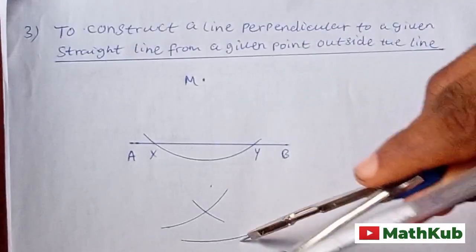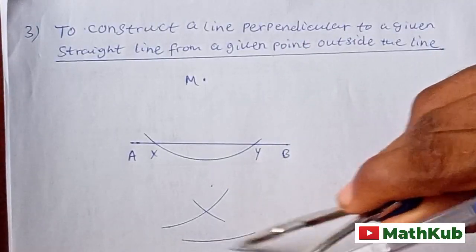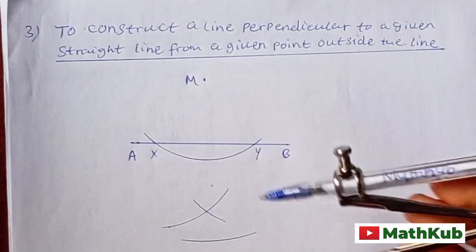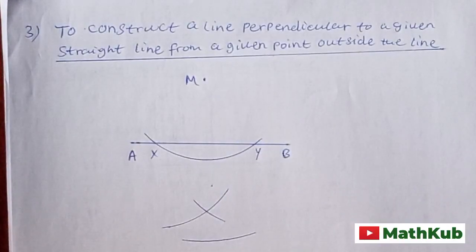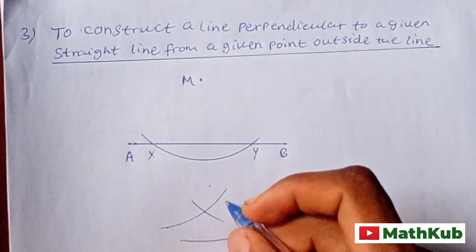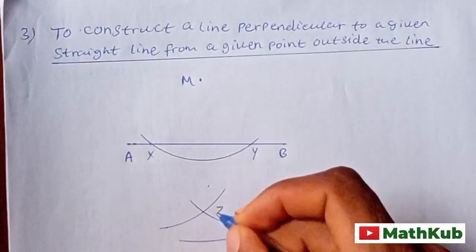All right, this line is not part of the construction. That's why I say when you are doing your construction, you should use a pencil because you can clean it out. I'm using pen, so don't mind. You can call this point Z.